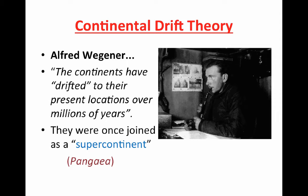Wegener died before he could find any proof. It wasn't until a hundred years later that his theory was proved. The reason that he died discredited was because he could not prove the mechanism that made the plates move. He thought that the continental plates plowed through oceanic crust, much like a boat would plow through water, and that the oceanic crust would crumble on the sides.